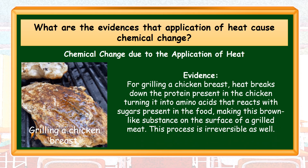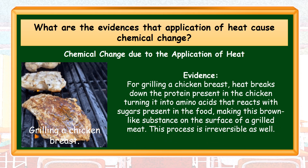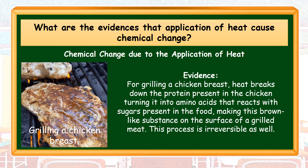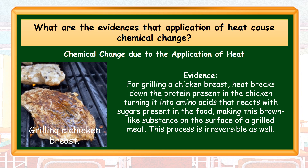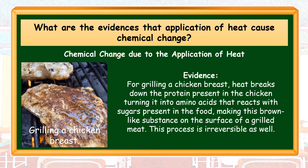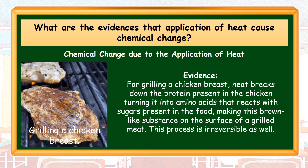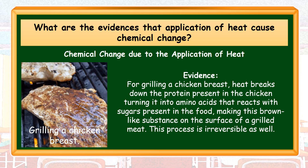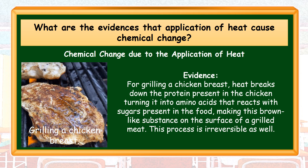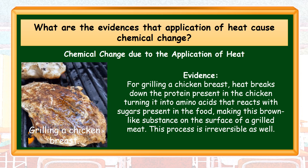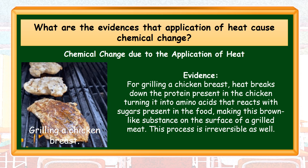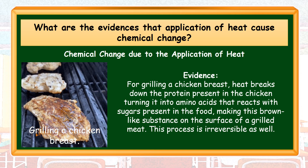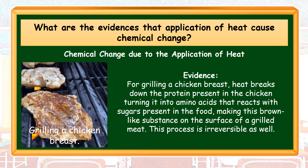For grilling a chicken breast, heat breaks down the protein present in the chicken, turning it into amino acids that react with sugar present in the food, making a brown-like substance on the surface of a grilled meat. And this process is irreversible as well.